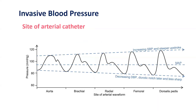The site of arterial catheter placement is also important. The mean arterial pressure remains essentially the same regardless of catheter site, while systolic pressure increases and diastolic pressure decreases as we go farther from the heart.